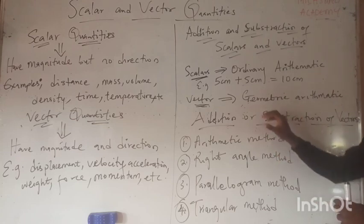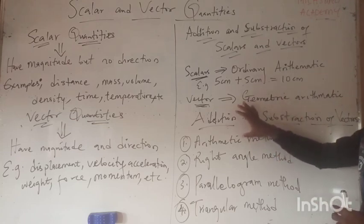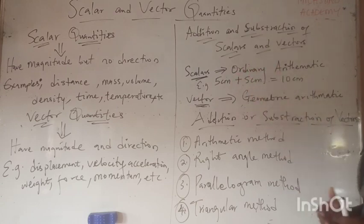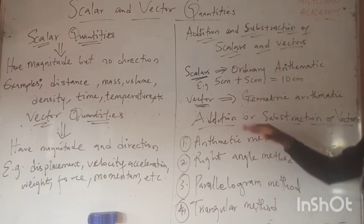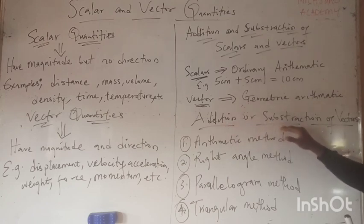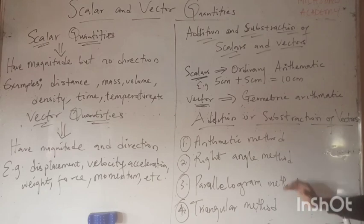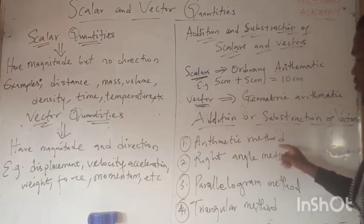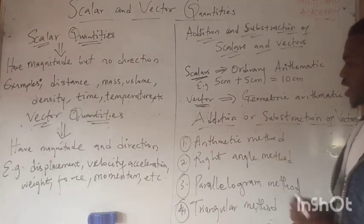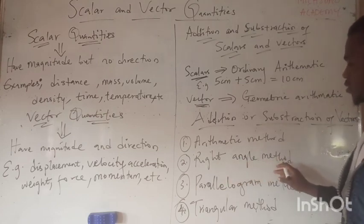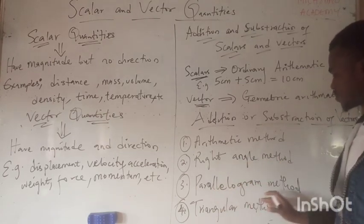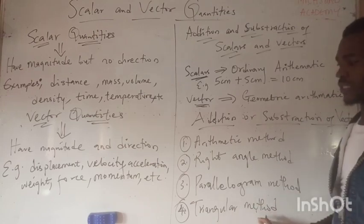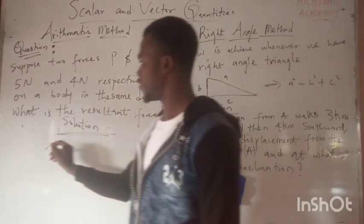In this video we are going to focus more on vector quantities, since scalars are quite simple to operate. For adding and subtracting vectors, we use four different methods: the arithmetic method, the right angle method, the parallelogram method, and the triangular method.